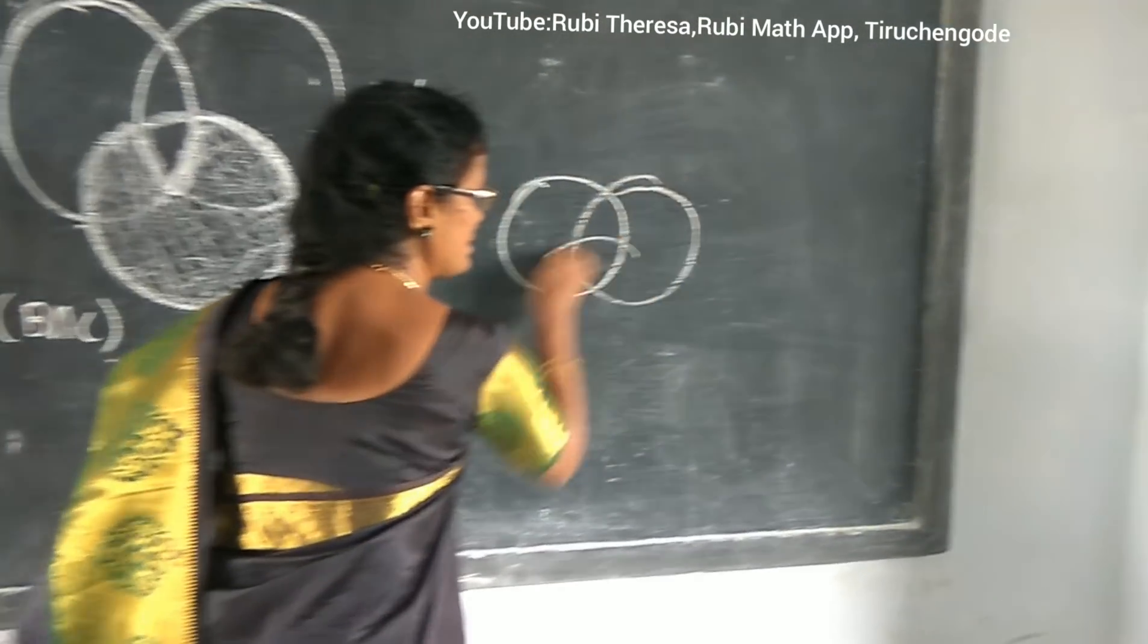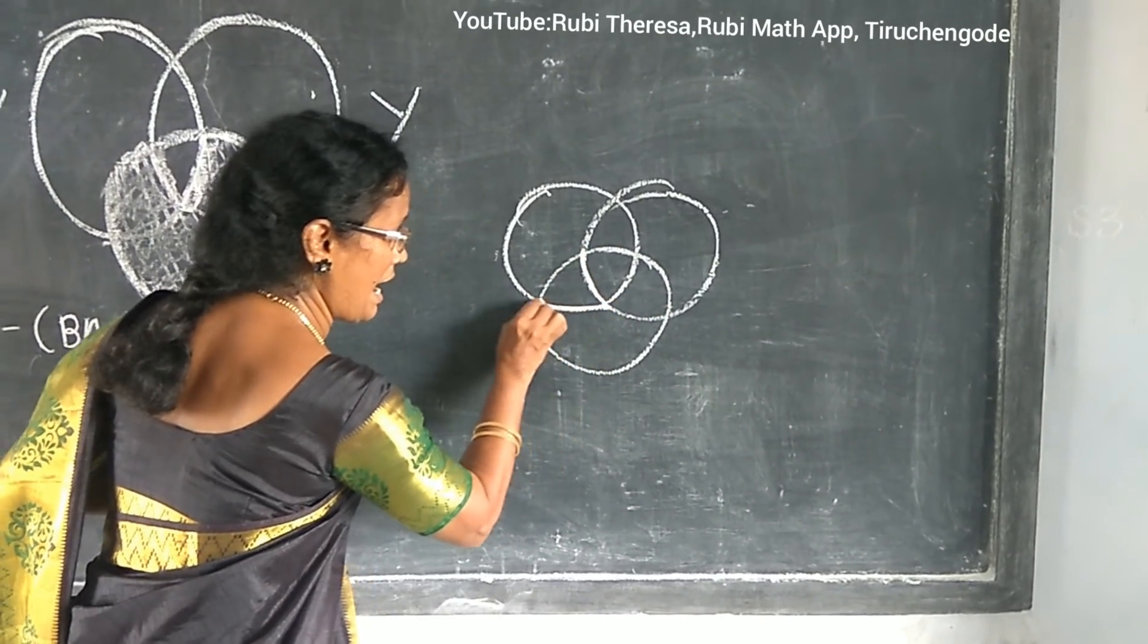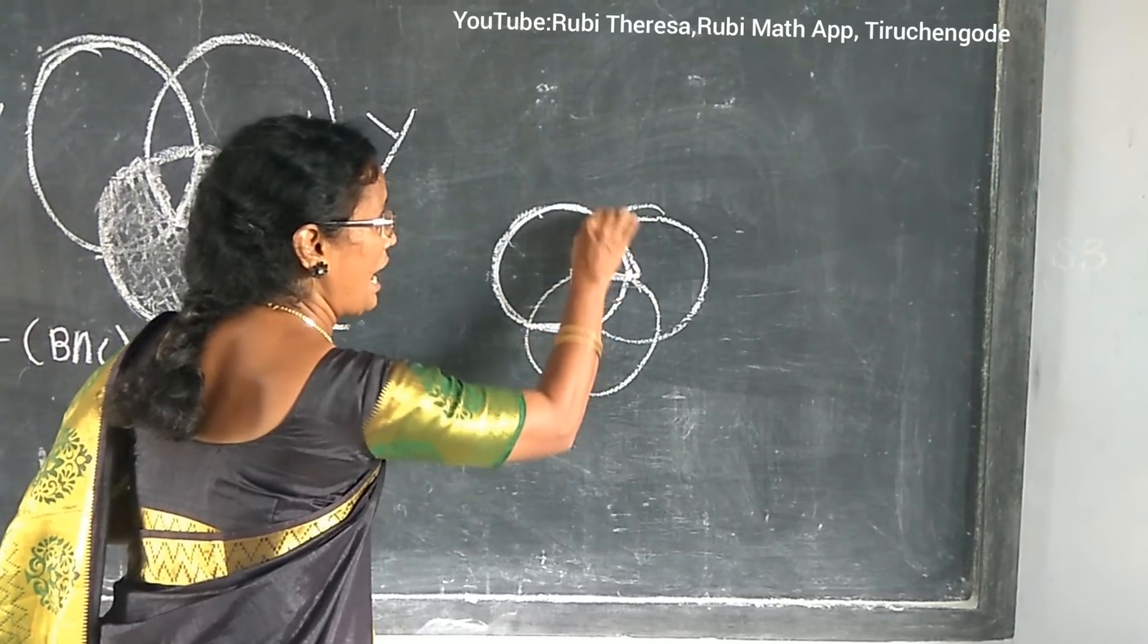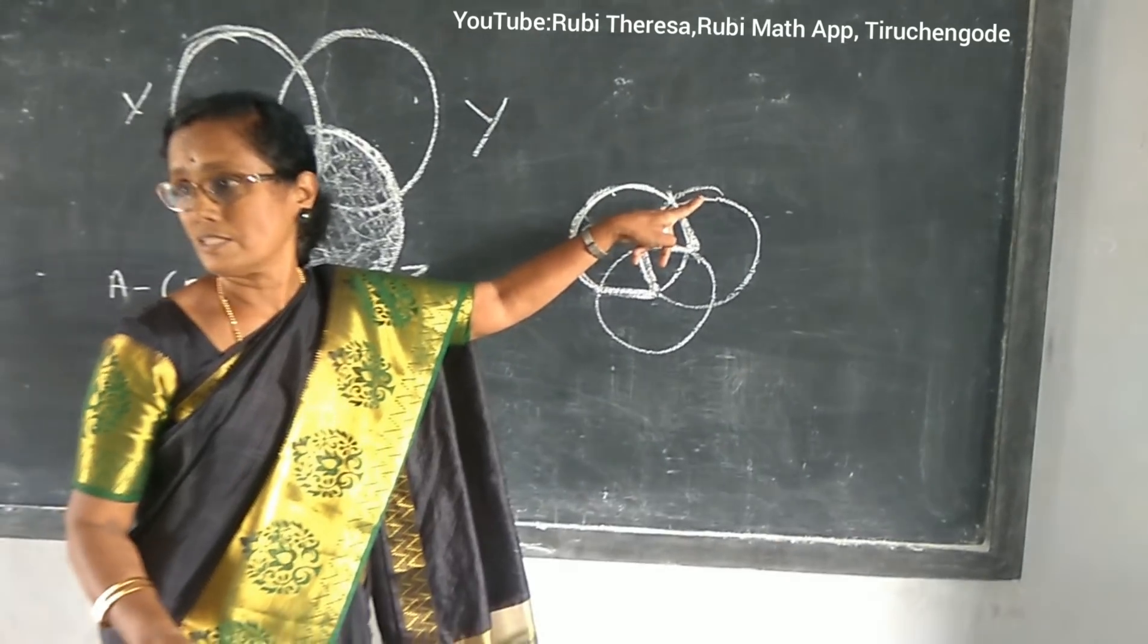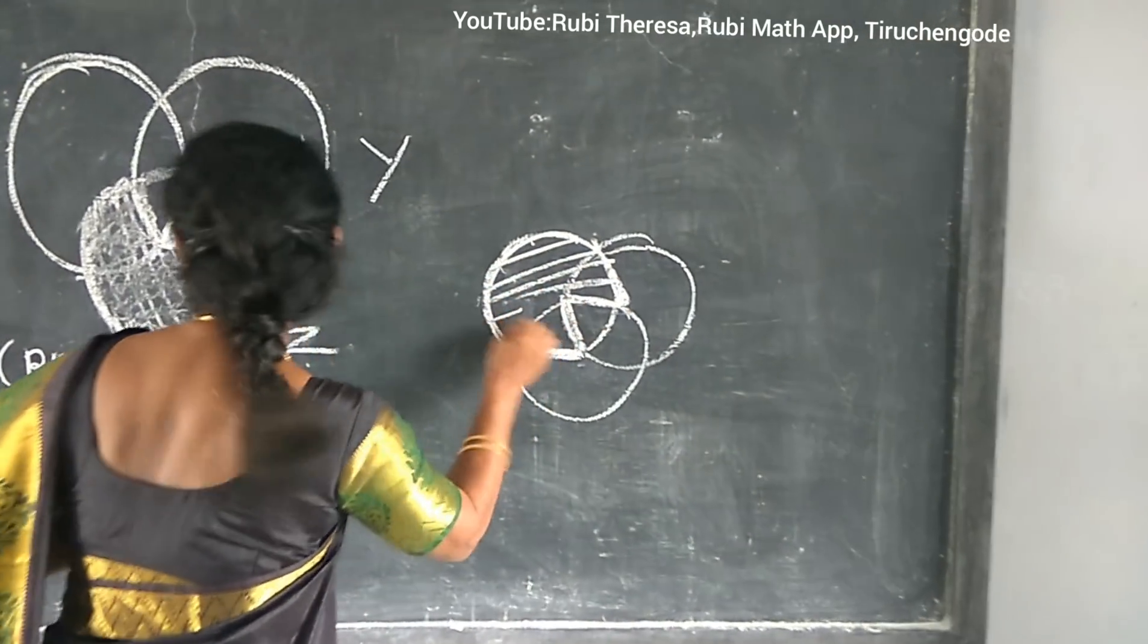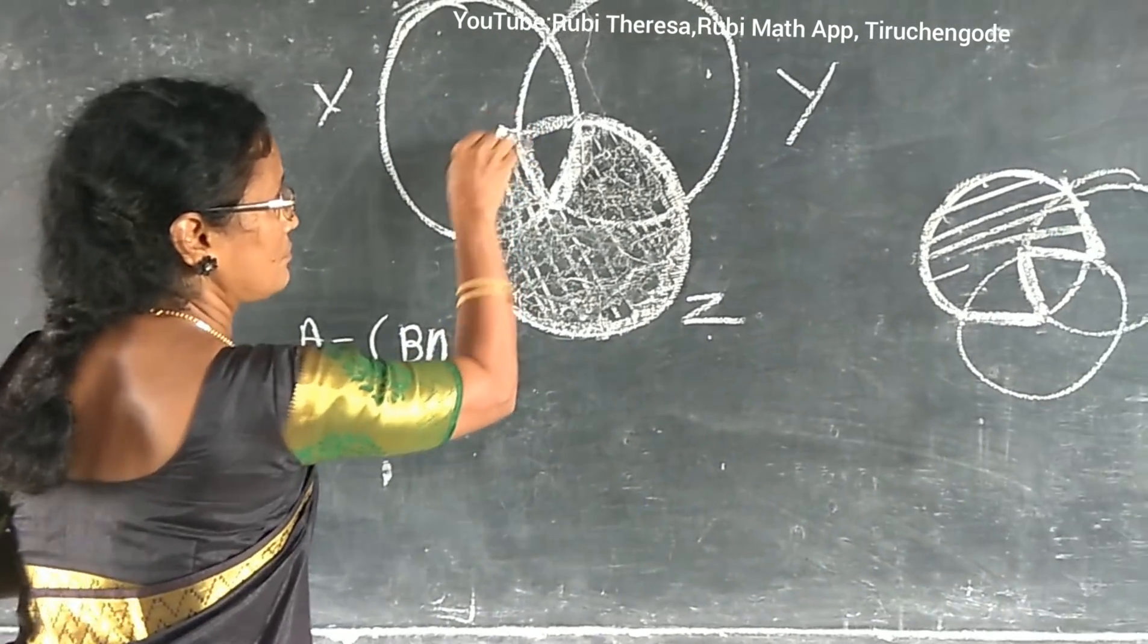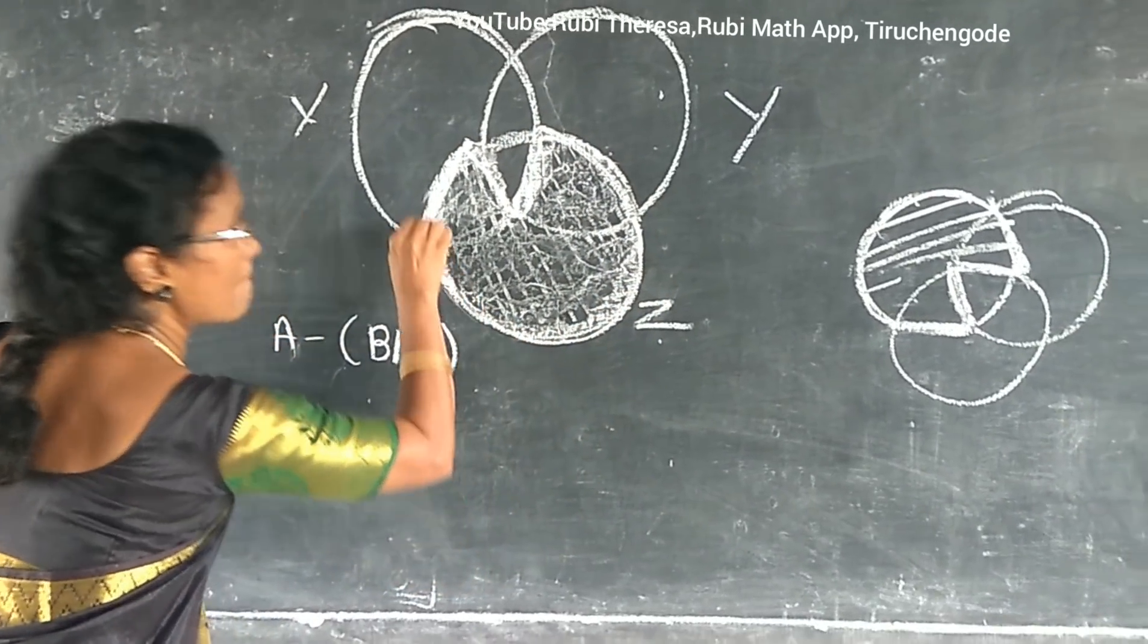We have studied, isn't it? B intersection C is this - A difference B intersection C. I told you to remember this, there will be W shaded. Do you remember this, what I told you? W shaded, the same W you are getting here, you see? Isn't it?